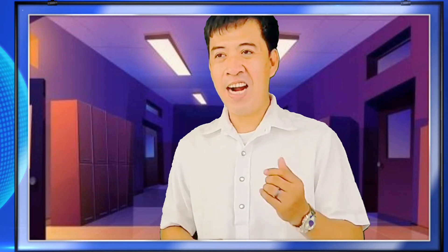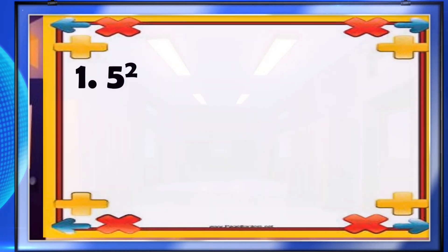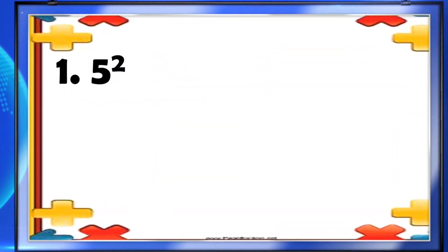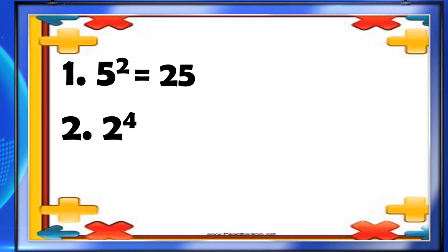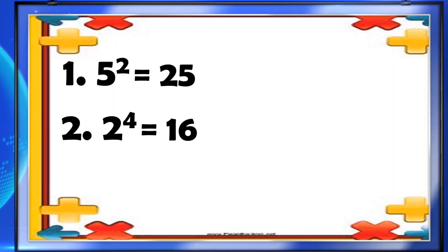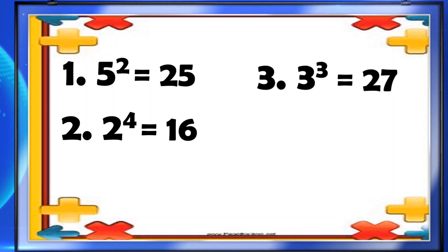Alright, kids! Are you ready? Let's start! Give the value of the following exponential notation. Number 1, 5 squared. The answer is 25. Number 2, 2 to the 4th power. The answer is 16. Number 3, 3 cubed. The answer is 27.